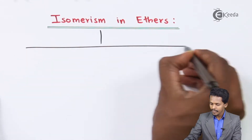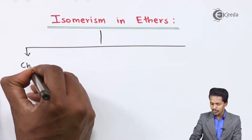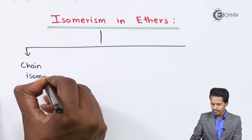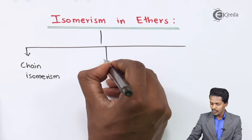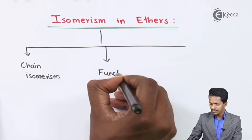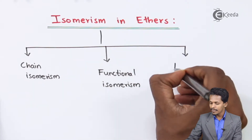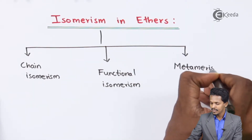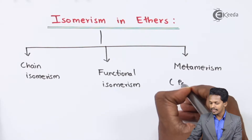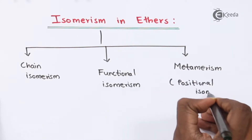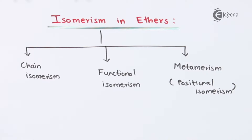The first type is known as chain isomerism, the second one is known as functional isomerism, and the last one is known as metamerism, or we could also call it positional isomerism. Let us understand the definition and examples of each, so we could understand chain, functional, and metamerism very easily.